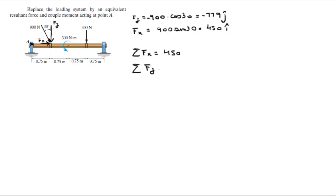Sum of the forces in the Y is equal to F of Y which is minus 779 minus 300, which is this force also going down, which means that minus 1079 is equal to the sum of the forces in the Y.